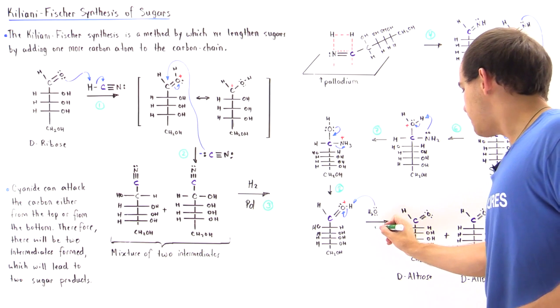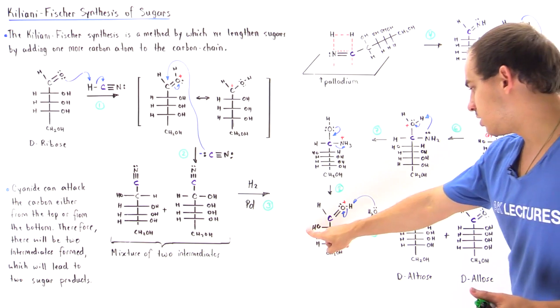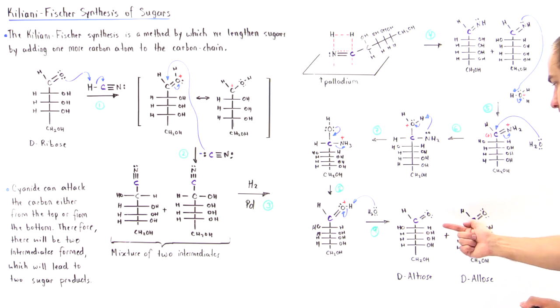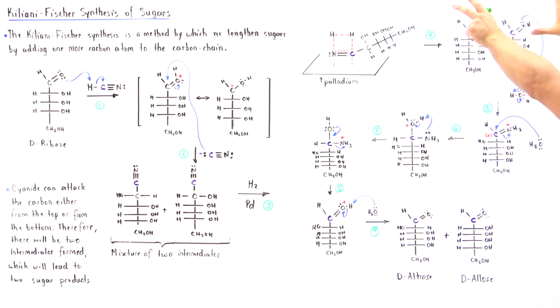Let's look at the symmetry. The OH should be found on this side, so we form D-altrose. But if this intermediate underwent these same steps, we would have formed our D-allose. In fact, because we have these two intermediates present, they will both undergo this reaction to produce these two new sugars.